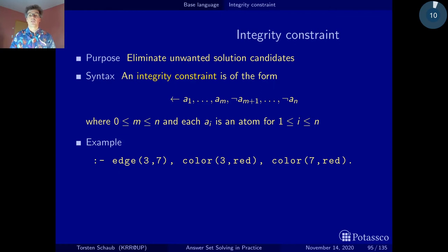Here's an example from the graph coloring problem, which says that it must not be the case that node 3 and 7 are connected by an edge but both 3 and 7 are colored with red. A typical example for an integrity constraint.